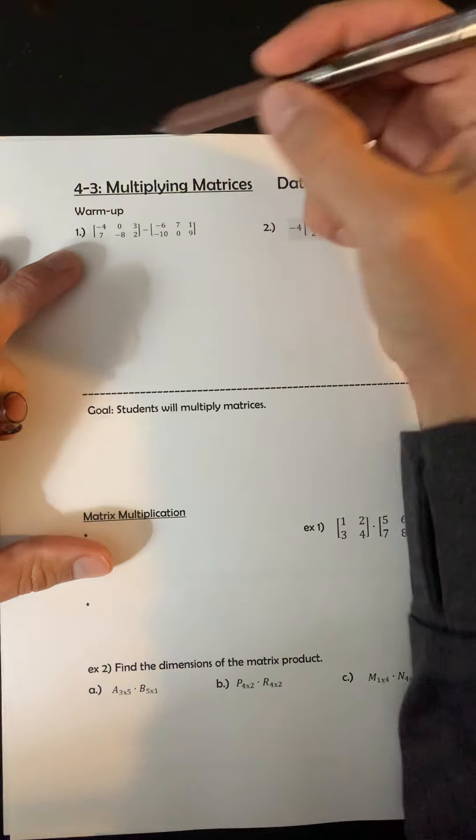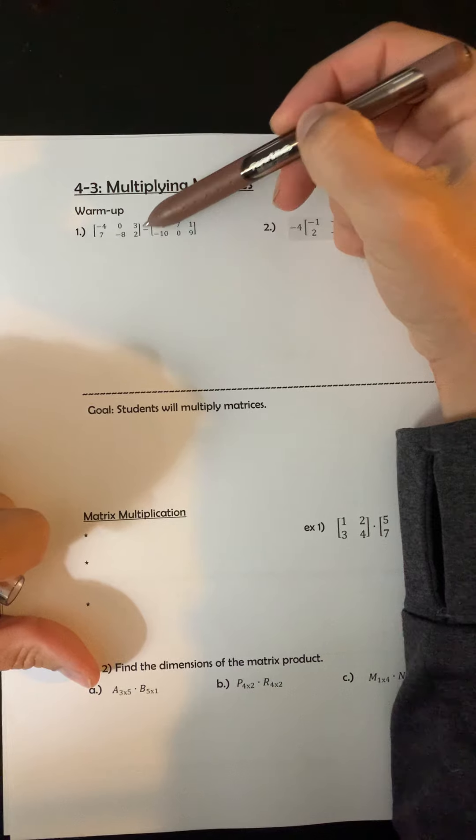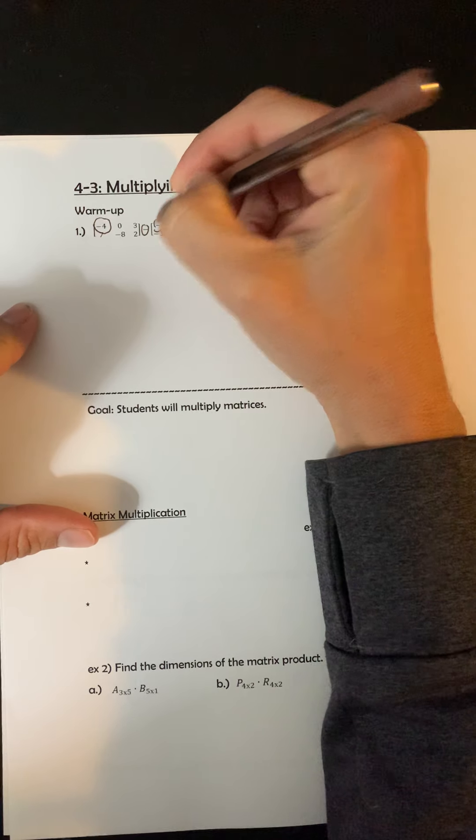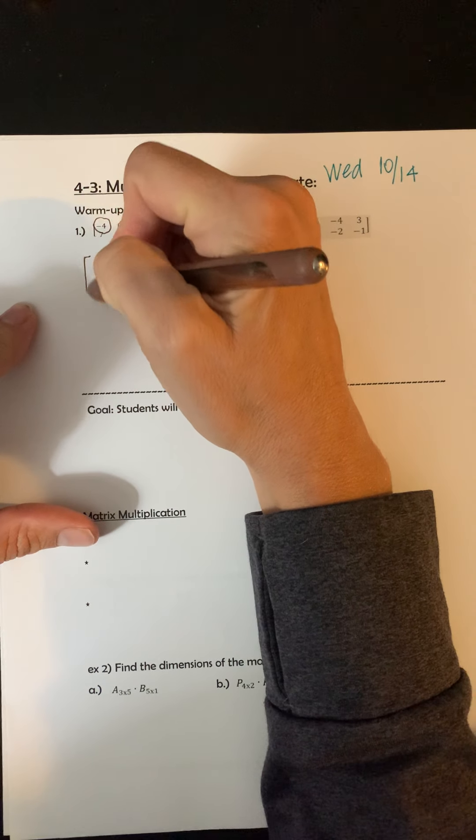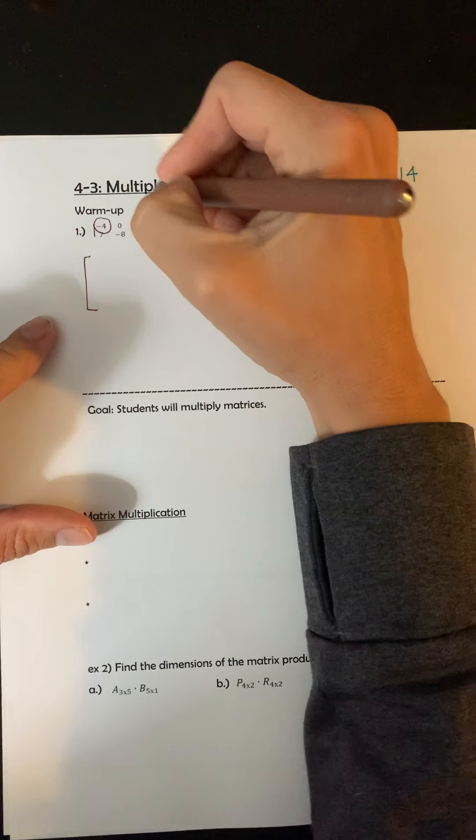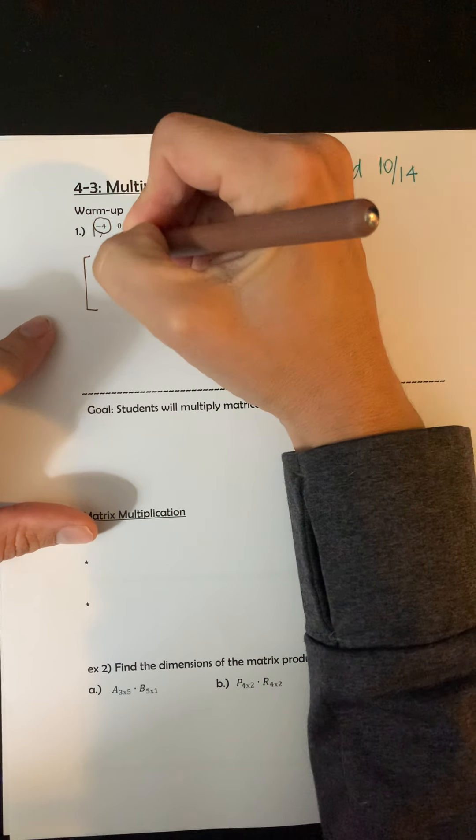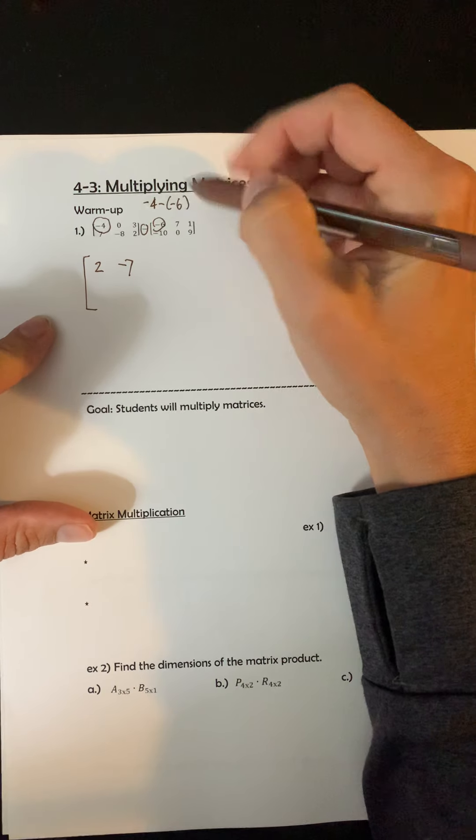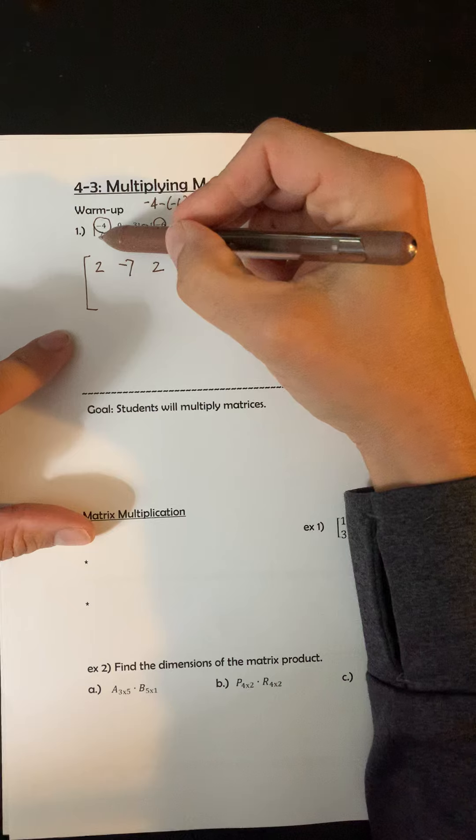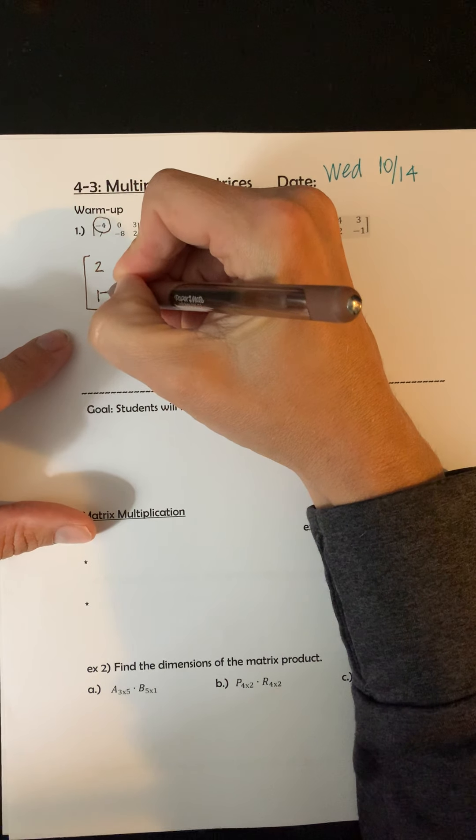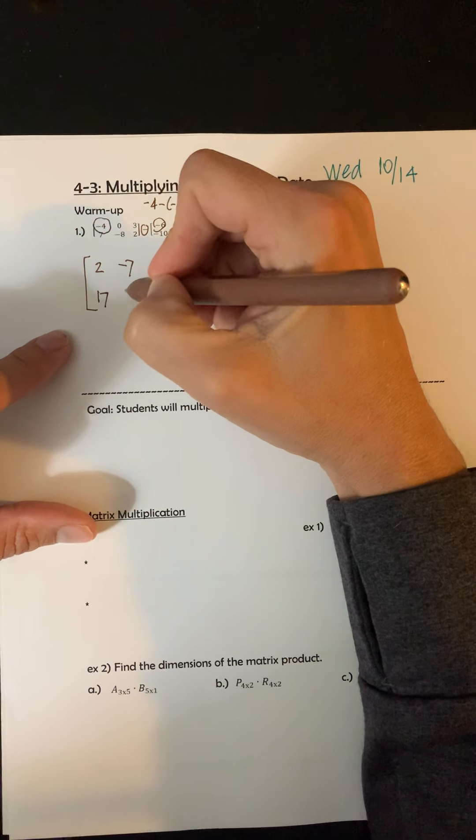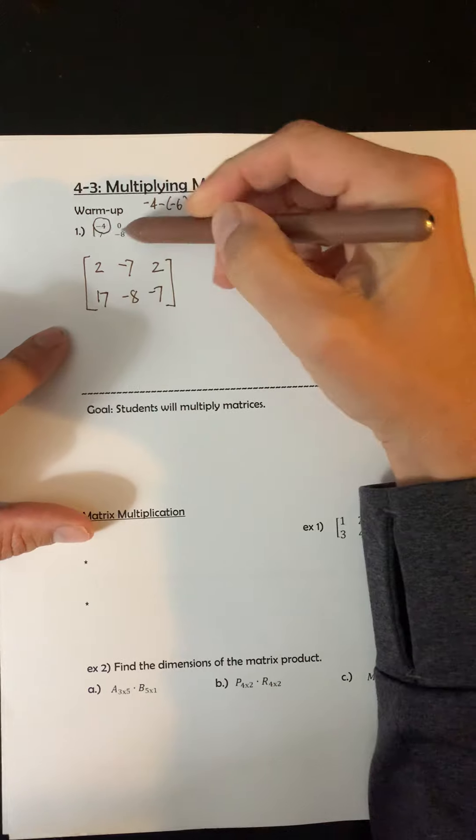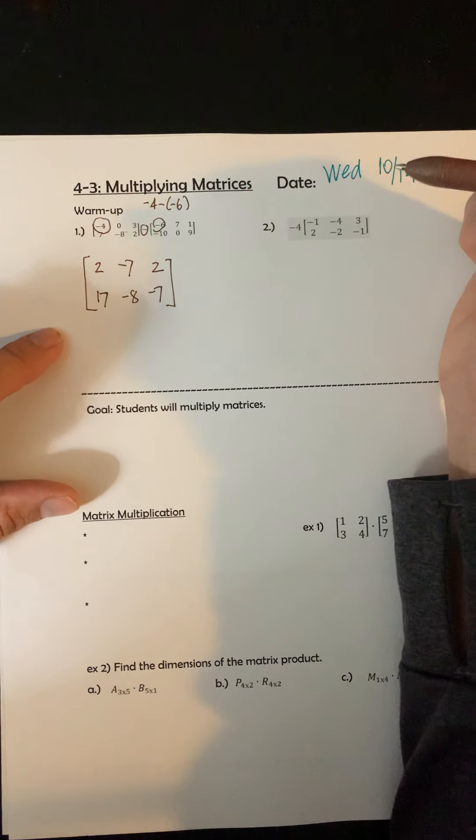So you'll notice here we're subtracting, so I need to do -4 minus a -6. Just a reminder that you subtract the values in the same position. Now -4 minus a -6 is a little bit of a pain because of the double negatives, so it's going to end up being a positive 2, 0 minus 7, 3 minus 1, 7 minus a -10, so another one like that, 17, -8 minus 0, and then 2 minus 9. So just subtracting all those values in the same position.